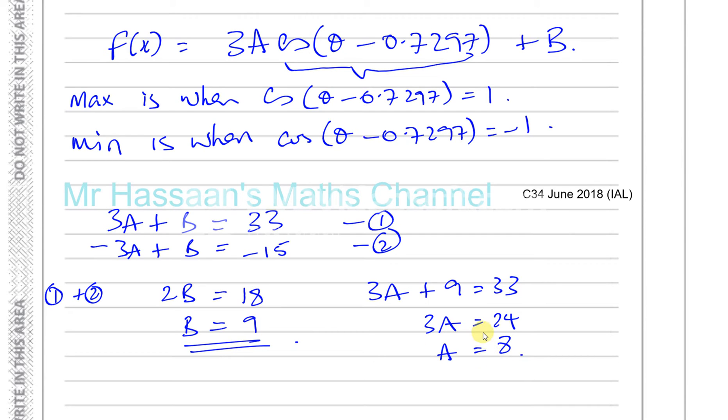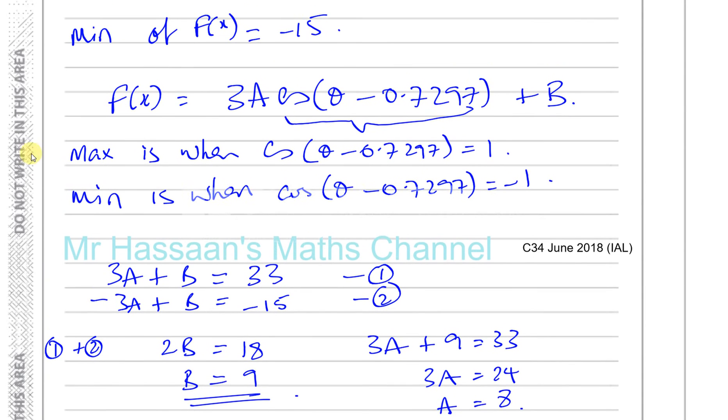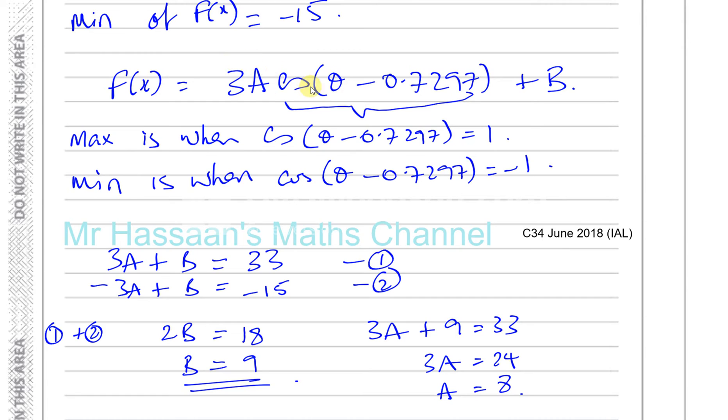Now, how would we find another possible value of A? Let's have a look at this. If A is 8, this will be 24 times cosine theta minus, so you're going to have 24 times cosine theta minus 0.7297 plus B.